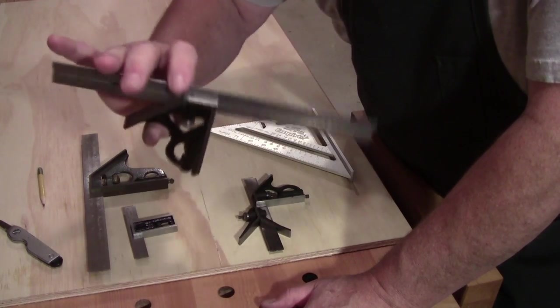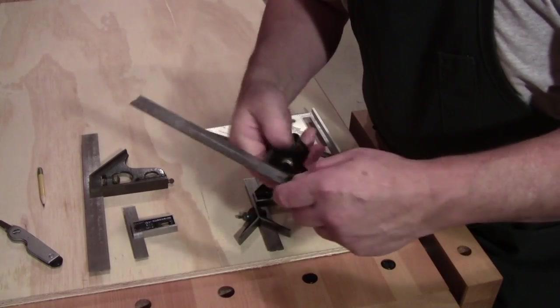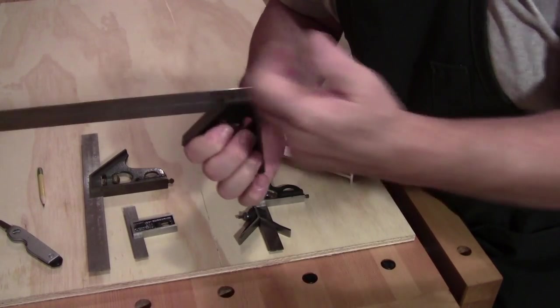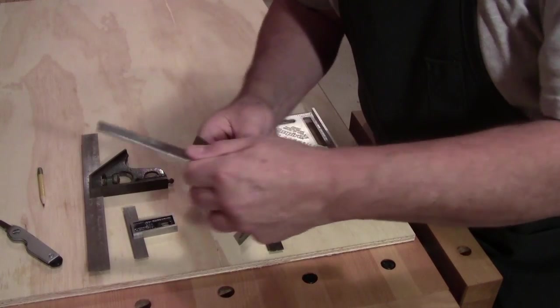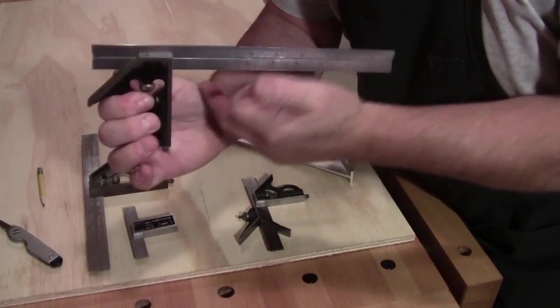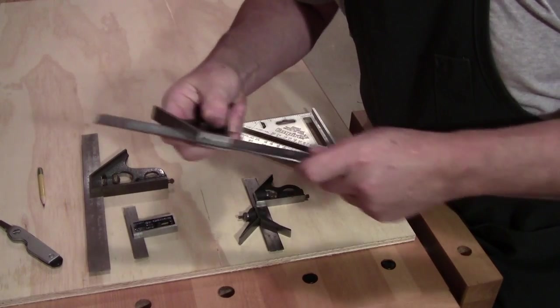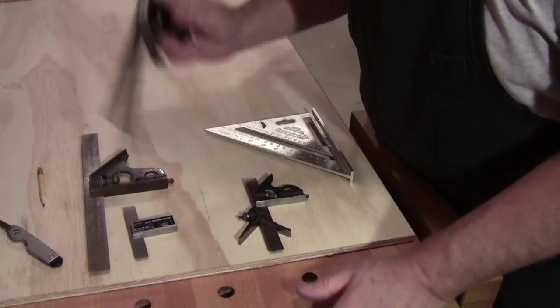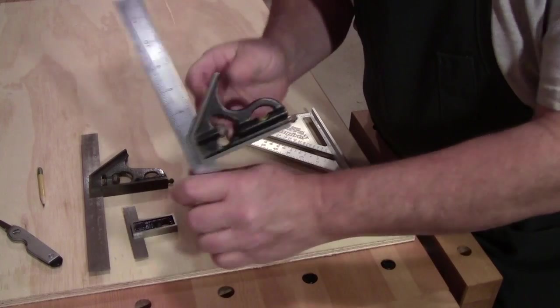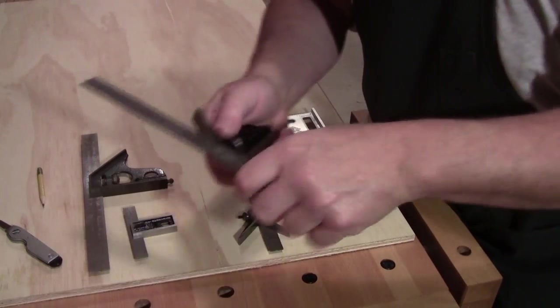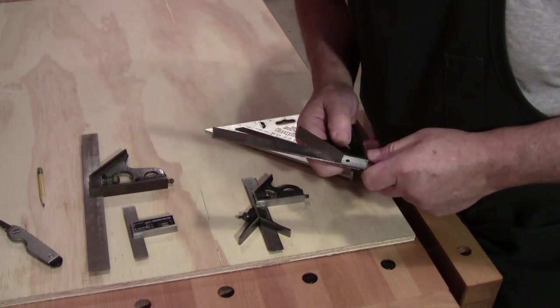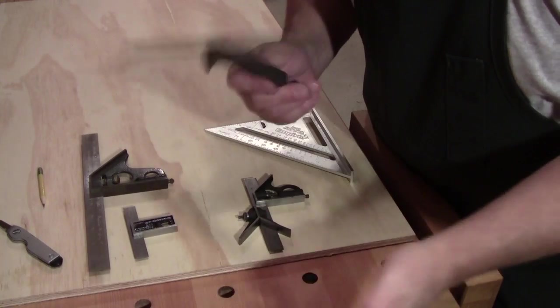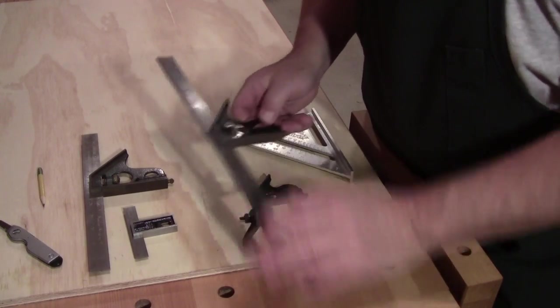These are called combination squares. They're called combination squares because number one, you can check inside squares with the inside of the tool. You can check outside squares with the inside of the tool, and you've got a 45 degree here which you can check from both sides. That's why it's called a combination square. And they also added a level in here, which you would use primarily if you're setting up a machine or you want to check to see that your bench is level. It's really not a very good level, but it is a level and it's on the level.